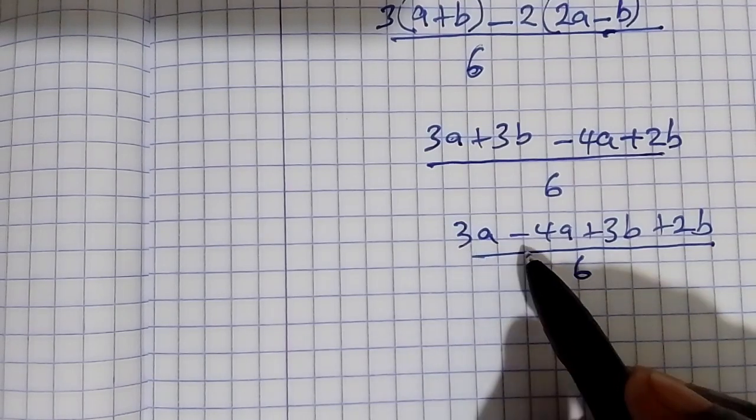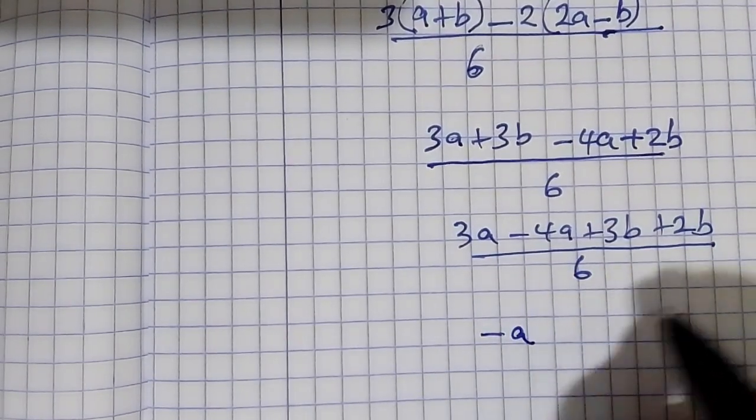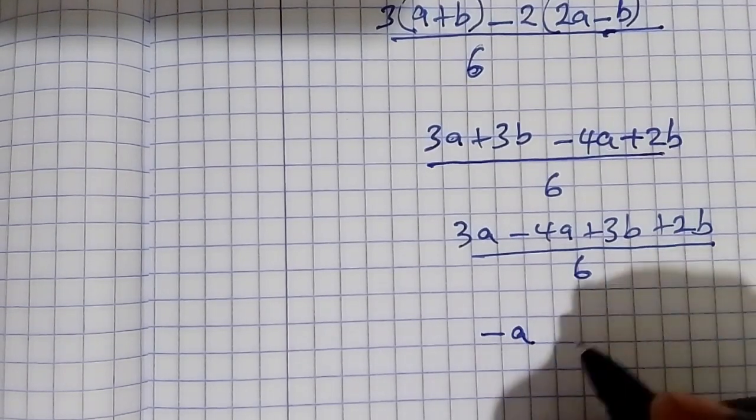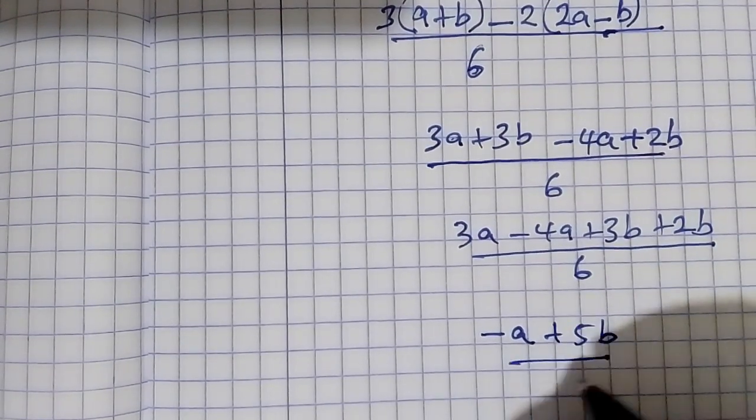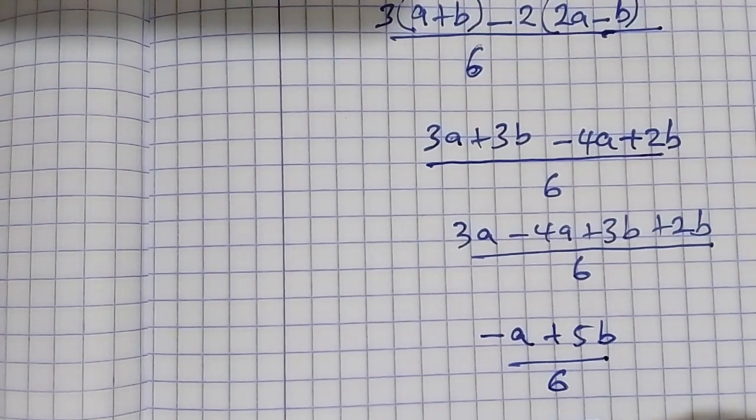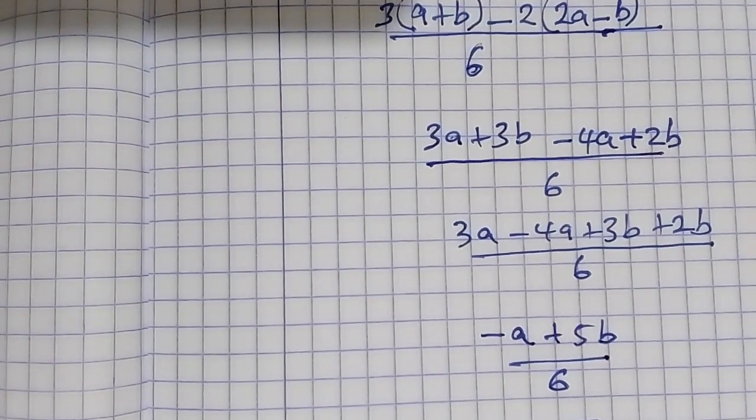3a minus 4a is minus a. 3b plus 2b is 5b over 6. So our answer is going to be minus a plus 5b over 6.